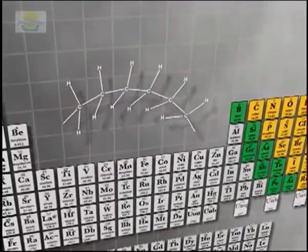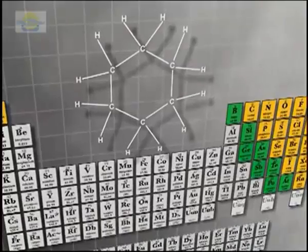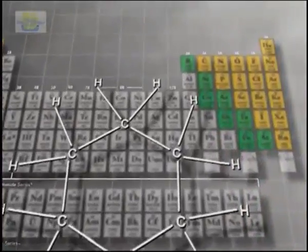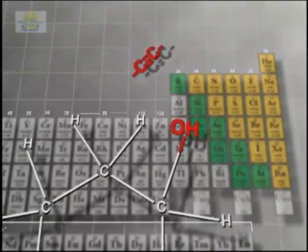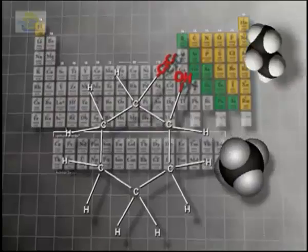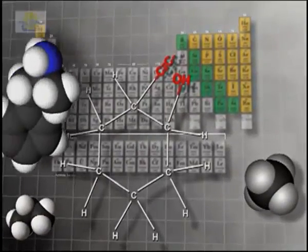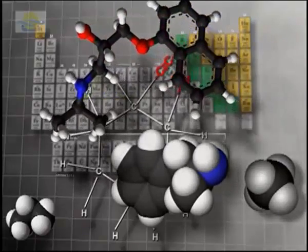We can attach carbons to one another and form very long chains, like we see in polymers like polyethylene in your water bottle. Or it can form ring systems where we take a chain, circle the two ends around, and attach them to one another. Other atoms or groups of atoms, called functional groups, often attach to carbon chains and rings, changing the properties of the molecule. The result is an unimaginable number and variety of carbon molecules, most of which fall into the category of organic compounds.